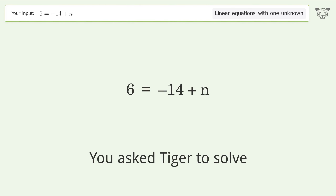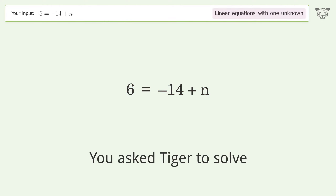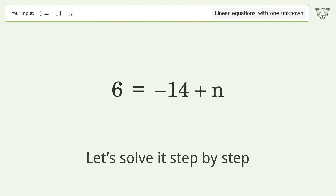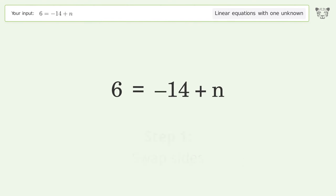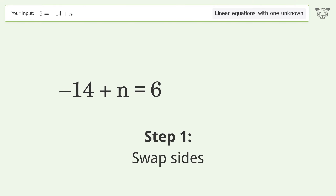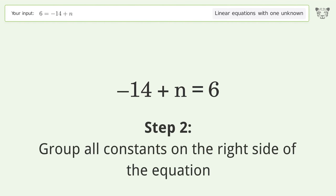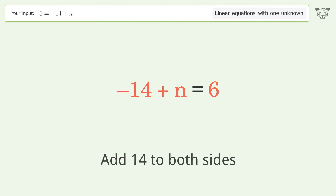You ask Tiger to solve this — it deals with linear equations with one unknown. The final result is n equals 20. Let's solve it step by step: swap sides, group all constants on the right side of the equation, and add 14 to both sides.